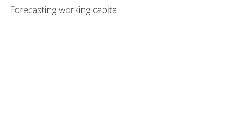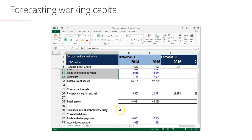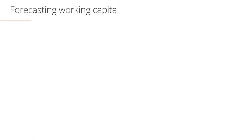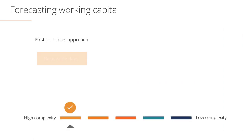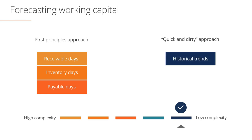Now that we've worked through property, plant, and equipment, let's turn to forecasting working capital. A first principles approach to forecasting working capital typically involves forecasting individual current assets and current liabilities using various working capital ratios such as receivable days, inventory days, and payable days. Our forecast model will use this approach. Alternatively, we could calculate working capital as one item in a quick and dirty way based on historic trends.